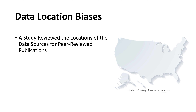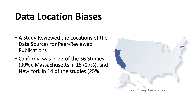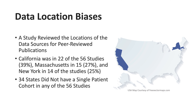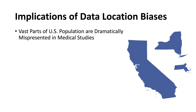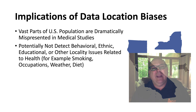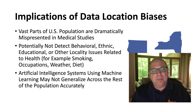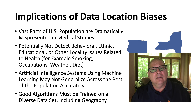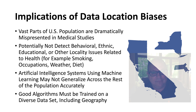Other data biases come from the location where data originates. One study found from a collection of articles from JAMA that just three states — California, Massachusetts, and New York — presented data for a wide range of studies. This creates an inherent geographical bias against patients in the middle of the country, which could be significant due to food, environmental issues, cultural issues, and more, impacting healthcare recommendations for those populations. The problem is, when we use artificial intelligence and machine learning systems trained on biased data, we now have biased systems.